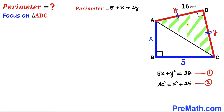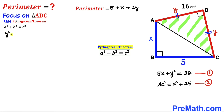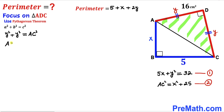Now let's focus on the other right triangle ADC and apply the Pythagorean theorem. In our case the hypotenuse is AC, while the two legs are both y. So we get y squared plus y squared equals AC squared, which simplifies to AC squared equals 2 times y squared. I'm going to label this as equation 3.